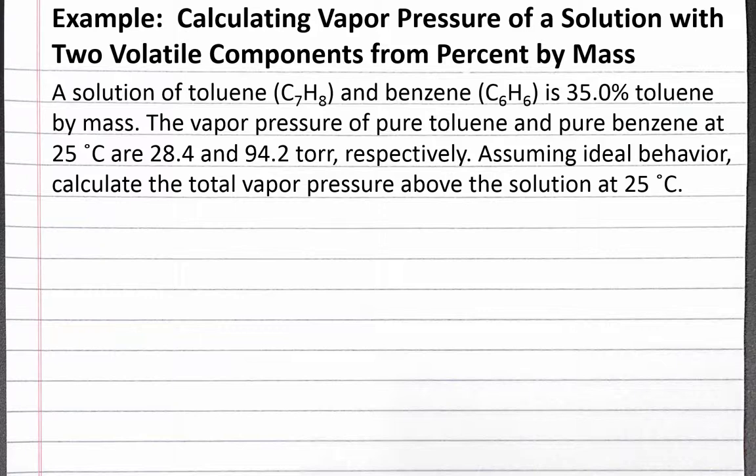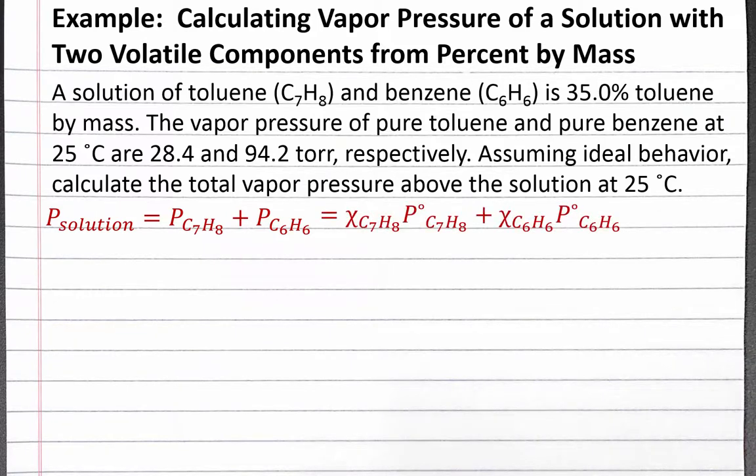Let's start with our equation for calculating the vapor pressure of the solution with two volatile components. The vapor pressure is equal to the vapor pressure of toluene plus the vapor pressure of benzene. We can calculate the vapor pressure of each component by taking the mole fraction of that component times the vapor pressure of the pure component. We're given the vapor pressure of pure toluene and benzene, so we can substitute these into our equation.